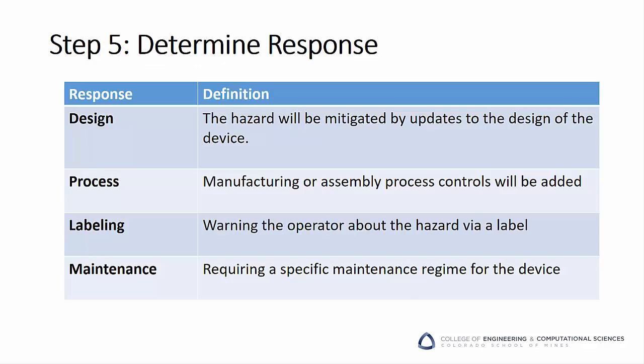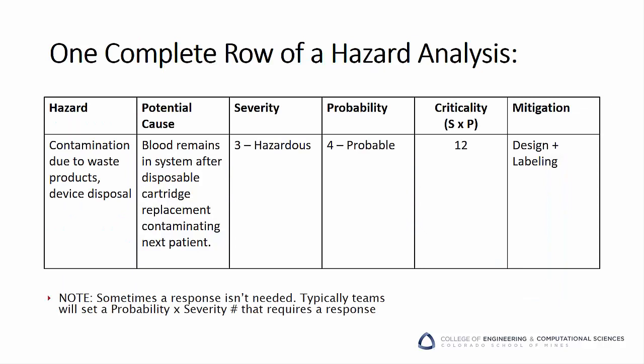And we do need to address critical hazards — it isn't enough to just make a list and then call it quits. Your team will need to sit down, look at the list of identified hazards, and decide how to mitigate them. Typical mitigations include updates to the design of the device, changing the manufacturing or assembly process controls or adding new controls, warning the operator about the hazard with a label, or requiring a specific maintenance regime for the device. For our example of cross-contamination, after some discussion within the team, we decided it makes sense to mitigate the hazard by actual design updates to ensure no cross-contamination. It will also probably require some labeling to remind nurses about the importance of avoiding cross-contamination. And with that, we've completely finished one row of a hazard analysis.